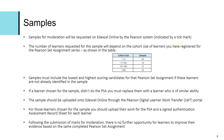If a learner chosen for the sample didn't sit the PSA, you must replace them with a learner of similar ability — for example, one with a similar target grade. The sample should be uploaded onto Edexcel online through the Pearson Digital Learner Work Transfer LWT portal. For those learners chosen for the sample, you should upload their work for the PSA and a signed authentication assessment record sheet for each learner. It's important to note that following the submission of marks for moderation, there's no further opportunity for learners to improve their evidence based on the same completed PSA assignment.